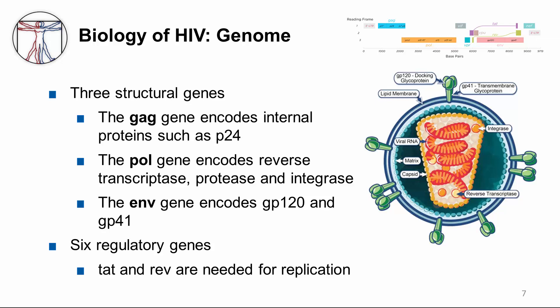Integrase and protease are important drug targets for HIV therapy. Among the structural genes, the ENV gene encodes GP120 and GP41, which mediate the attachment of the virus to the host CD4-positive cell. HIV also has six regulatory genes.